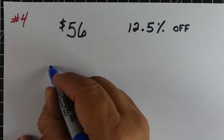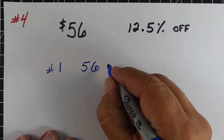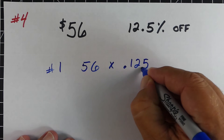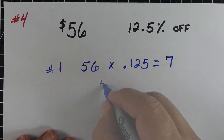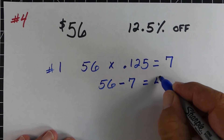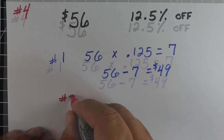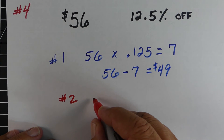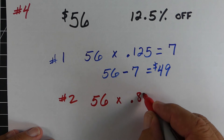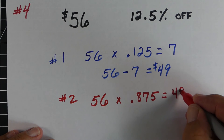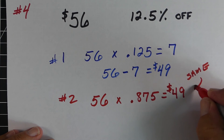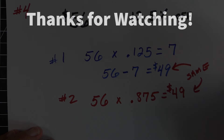Example 4: a $56 item, 12.5% off. Method 1: 56 times 0.125 (which is 12.5% as a decimal) gives us $7 saved. Subtract from 56 and we get $49 as our sale price. Method 2: take 56 times 0.875 — the percent we have to pay for — and that also gives us $49. Both methods give the same result.